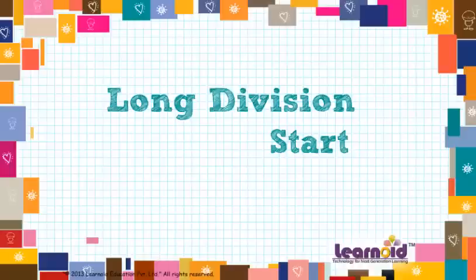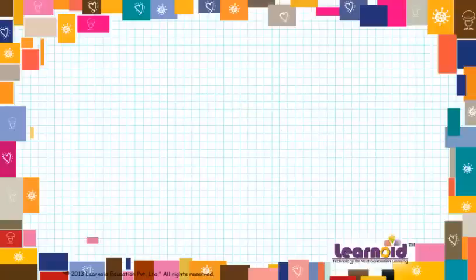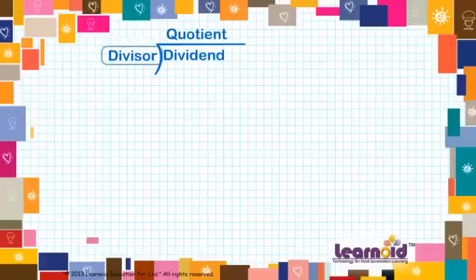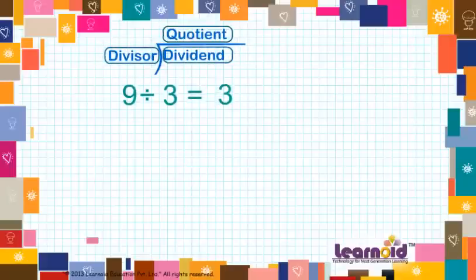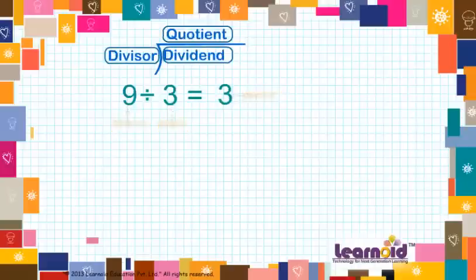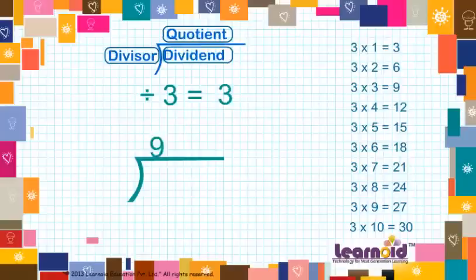Today we will learn what is long division. Division can also be shown as divisor and dividend. For example, 9 divided by 3 is equal to 3. We can show this in long division like this.